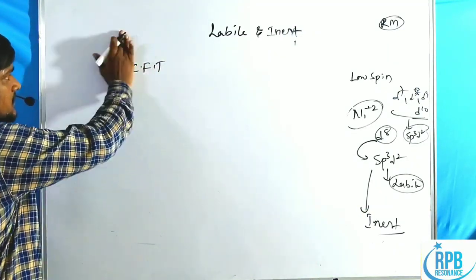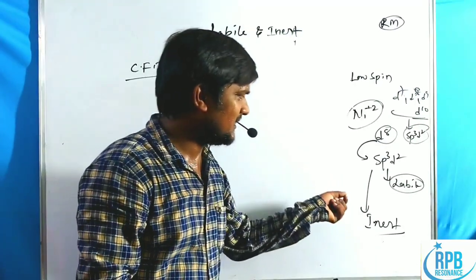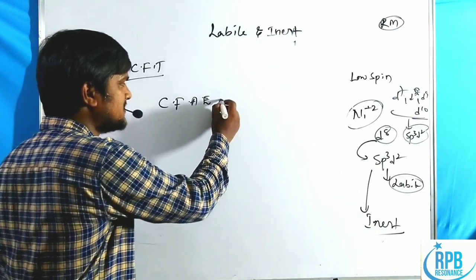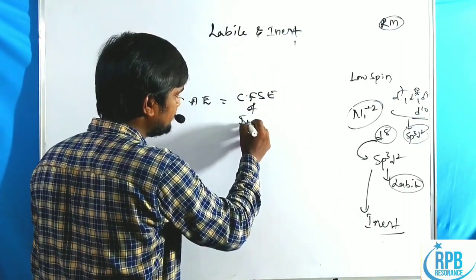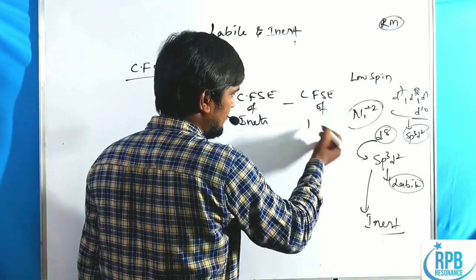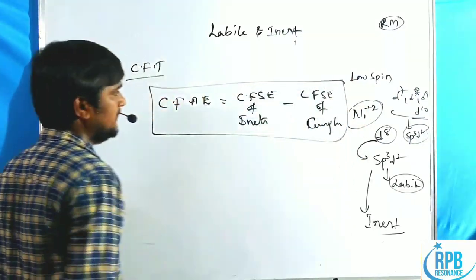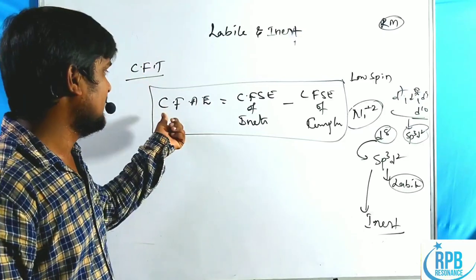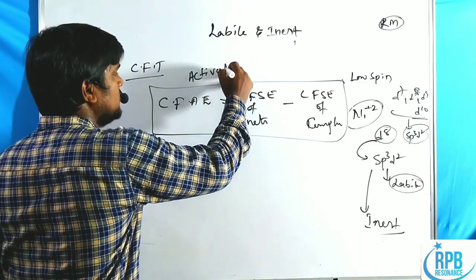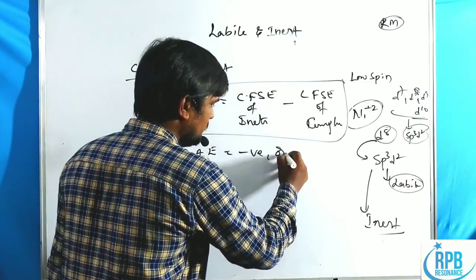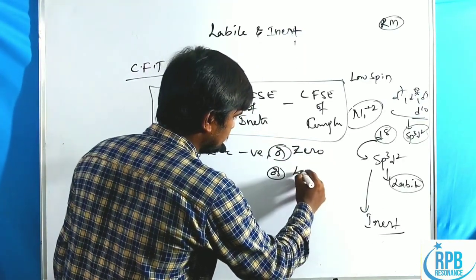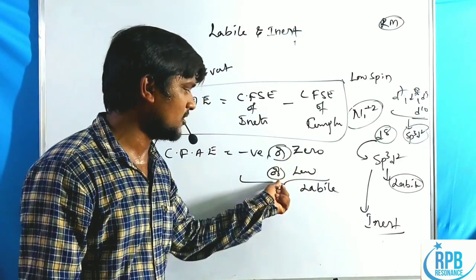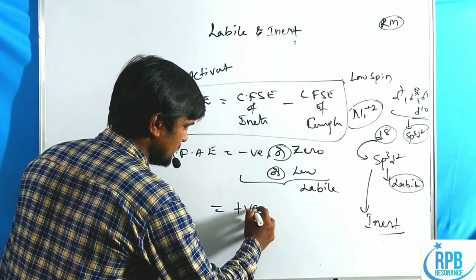According to CFT, the D8 configuration inertness is explained clearly with the help of crystal field activation energy (CFAE). The CFAE formula is: CFAE = CFSE of intermediate minus CFSE of complex. If CFAE is equal to negative or zero or low, then such complexes are called labile complexes. If CFAE is positive, then it is called inert complexes. In VBT, outer orbitals are labile and inner orbitals are inert. In CFT, negative/zero/low CFAE values mean labile; positive CFAE means inert.